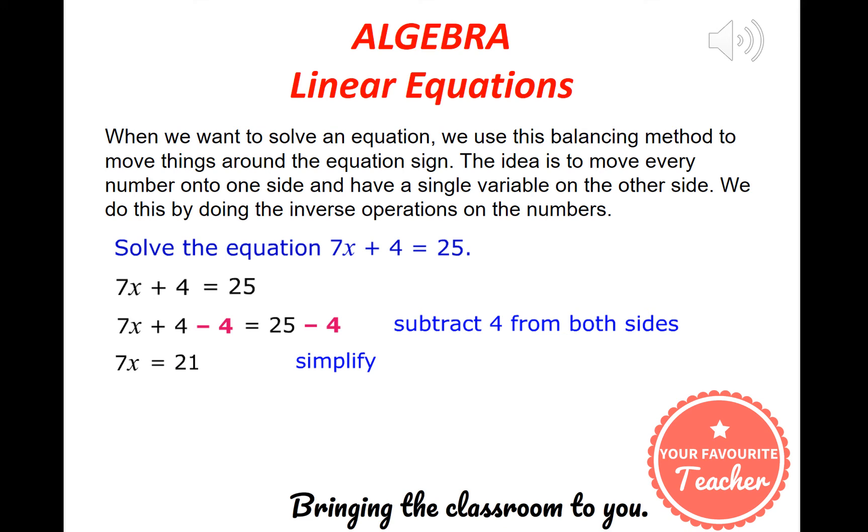So when I simplify that, the 4 has disappeared and I now have 7x is equal to 21. I'm looking at 7x on the left hand side and the key is to try and get rid of that 7. I'm multiplying by 7, so the inverse operation is going to be divide by 7. So if we divide both sides by 7, we get x is equal to 3, and that's our answer.